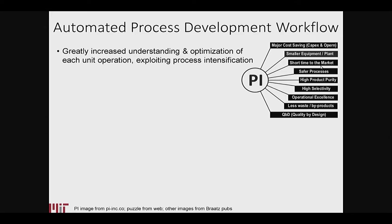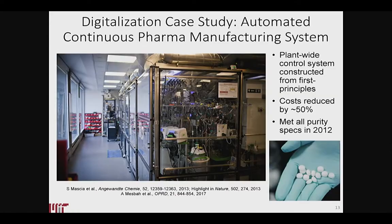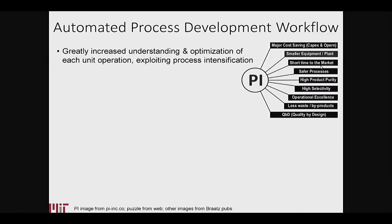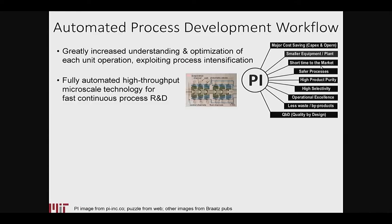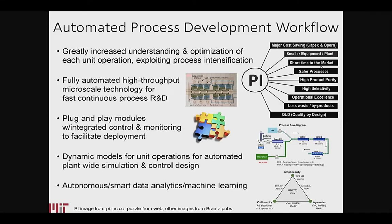What's new is really trying to get automated workflows — how do you automate what people do to develop a process? Something like this was developed by six faculty and an army of postdocs and graduate students. How do you try to automate that? How do you replace a human and hopefully do better? We've been looking at basically five different strategies, including process intensification, micro-scale technologies, plug-and-play modules, dynamic models, plant-wide simulation — the bread and butter of controls people.